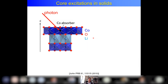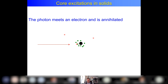I start with the photon: I tune the photon energy to the 1s core level binding energy of cobalt. The photon meets an electron and is annihilated. Photons do not interact with the nuclei — cross-sections are extremely small; only Mössbauer studies that effect. But 99.9999% of photons interact with electrons, and by far the strongest effect is annihilation of the photon by an electron.